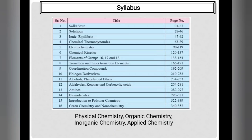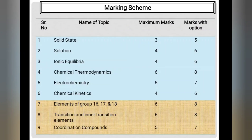We have already discussed in the previous video that chemistry has been divided into four different sub-branches: physical, organic, inorganic, and applied chemistry. For today's video, the topics and their weightage in HSC board examination are: solid state 3–5 marks, solutions 4–6 marks, ionic equilibria 4–6 marks, and chemical thermodynamics 6–8 marks.